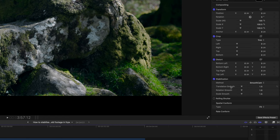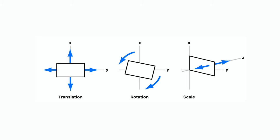Smooth cam is the one I'm going to use, and you can see it's got three different parameters: translation smooth, rotation smooth, and scale smooth. Translation smooth controls the x and y axis — basically the up and down motion. Rotation is pretty self-explanatory, and scale controls the z axis, or that back and forward motion.